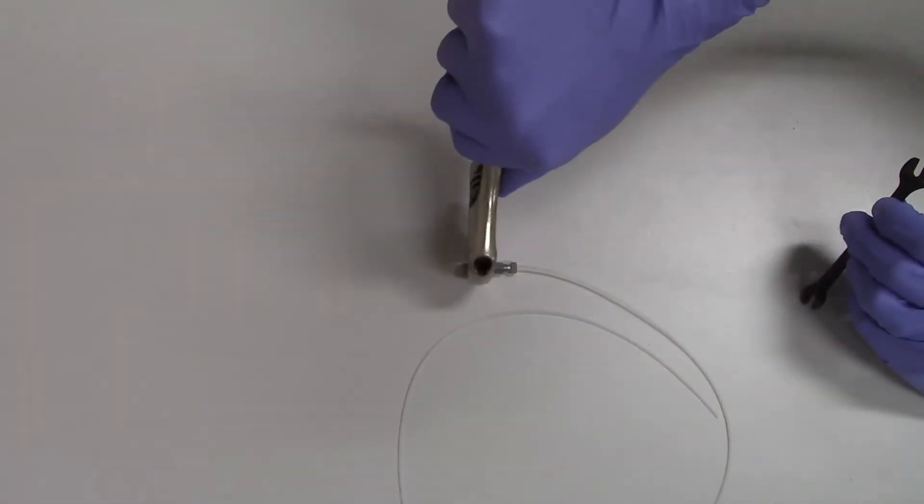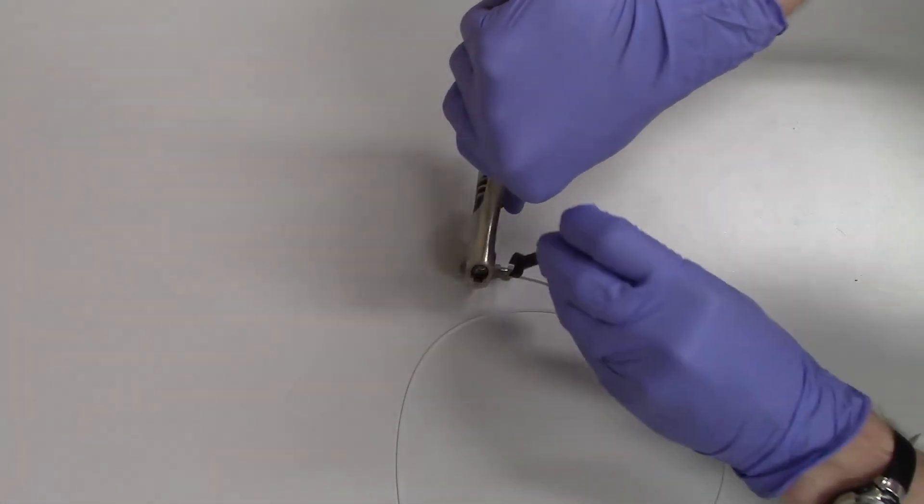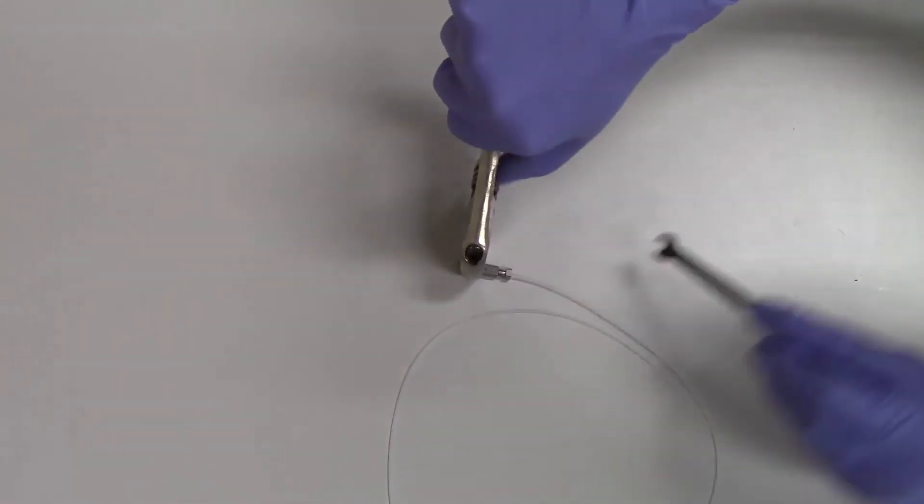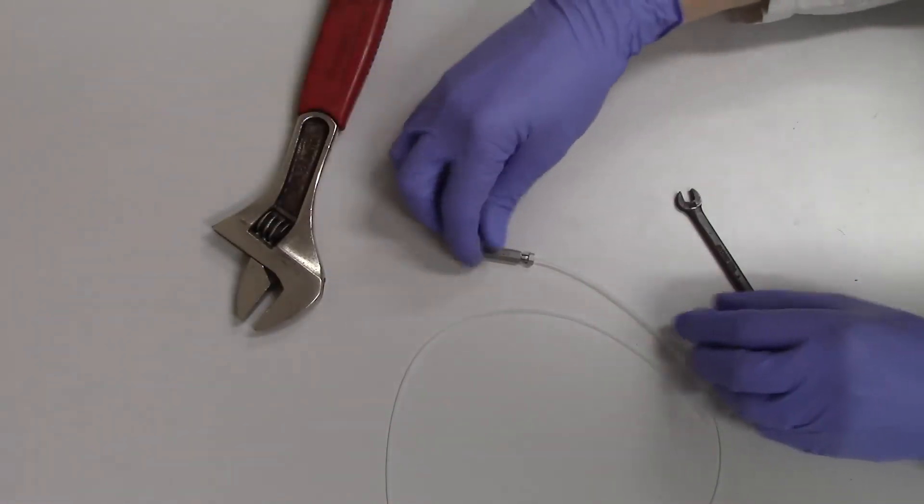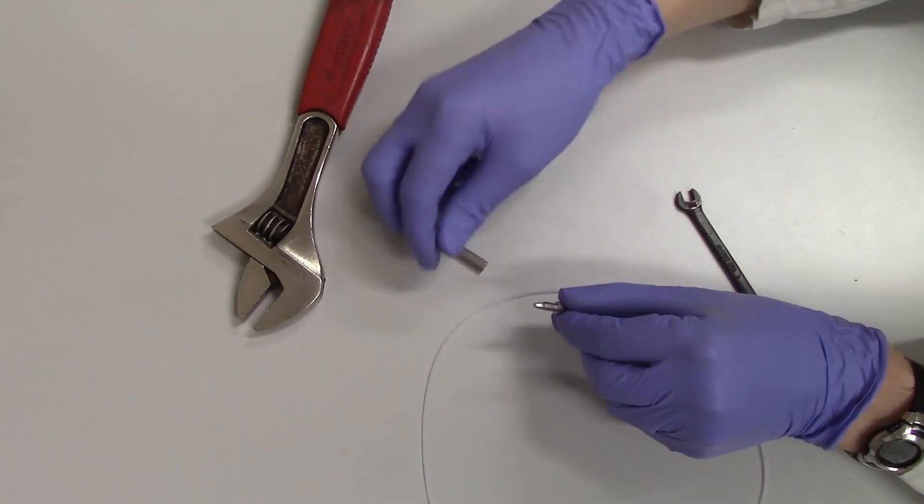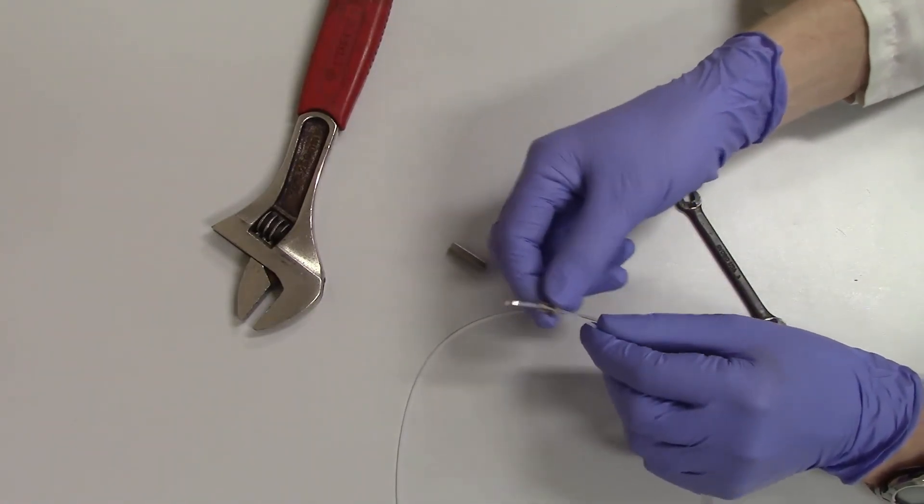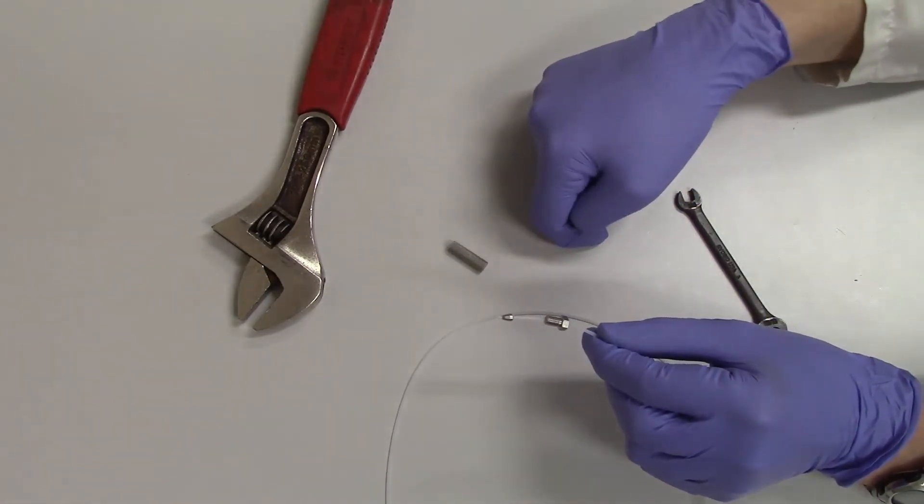Last, use the wrenches to loosen the nut from the connection piece. When it is removed, the ferrule should now be crimped onto the end of the piece of tubing, while the nut should still be loose enough to slide up and down and rotate around the tubing.